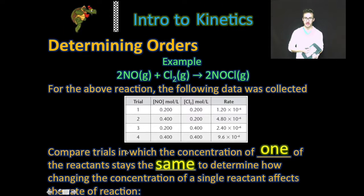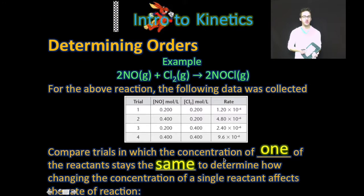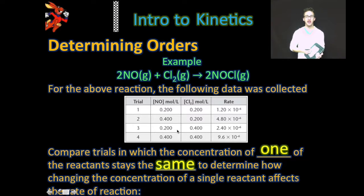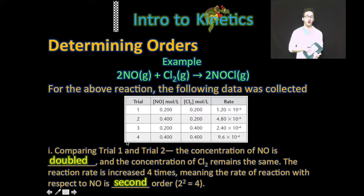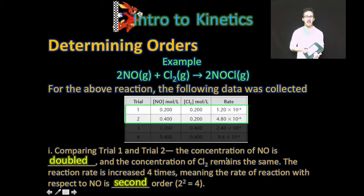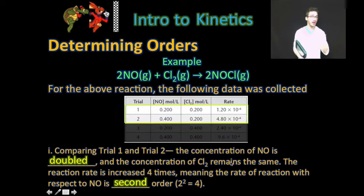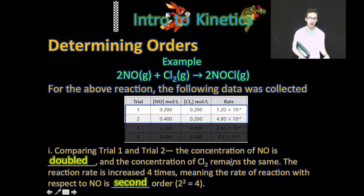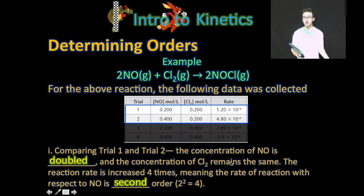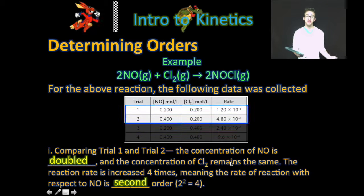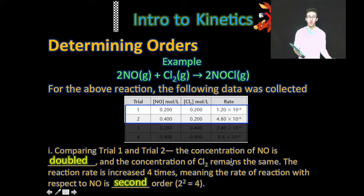Let's take a look at a sample reaction and talk about how we determine the orders with respect to the different reactants. We've run four different trials. We want to compare trials in which the concentration of one reactant stays the same. Comparing trials one and two, the concentration of NO is doubled while the concentration of chlorine remains constant. Therefore, any change in the rate must be because of our change in concentration of NO, not the Cl2. When we double the concentration of NO, the rate quadruples — from 1.20 × 10⁻⁶ molarity per second to 4.80 × 10⁻⁶. This means the reaction is second order with respect to NO.